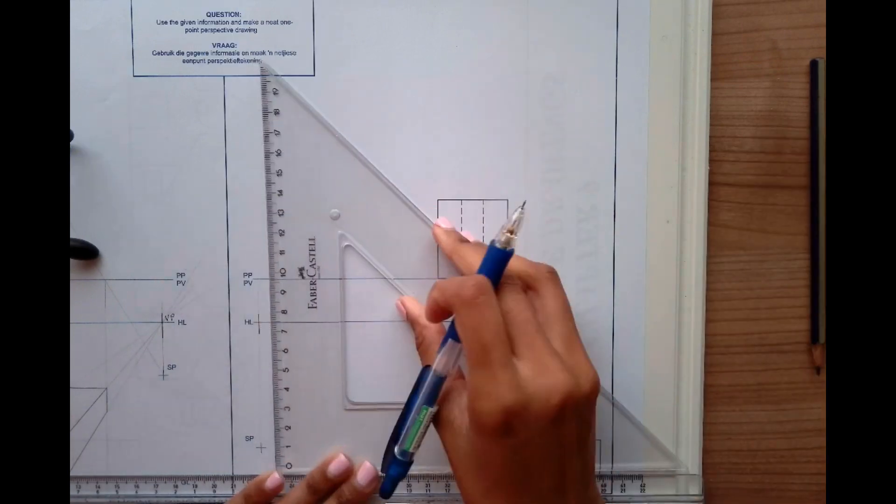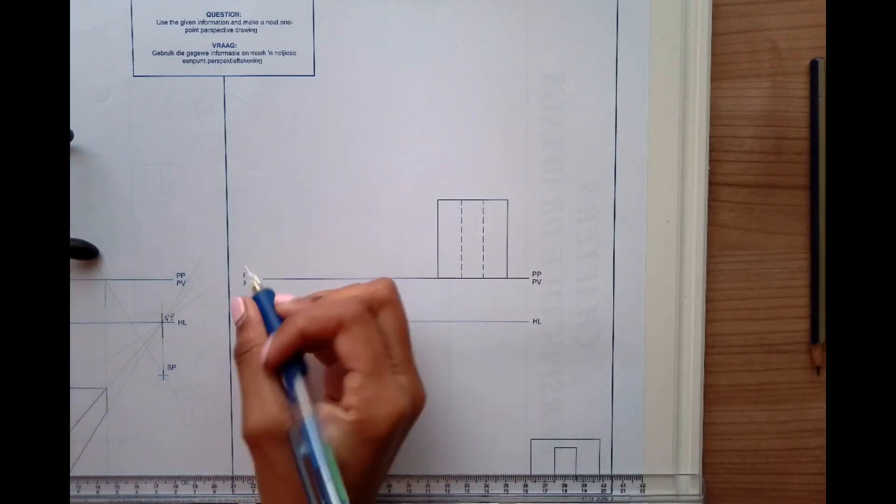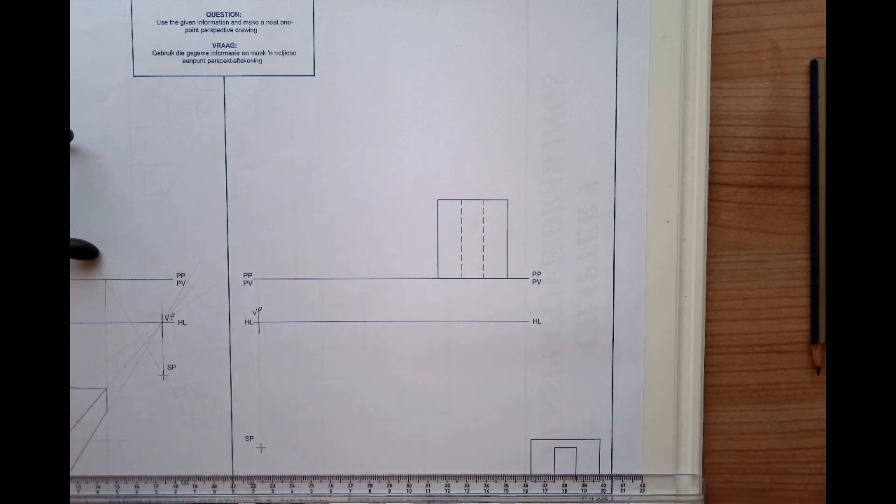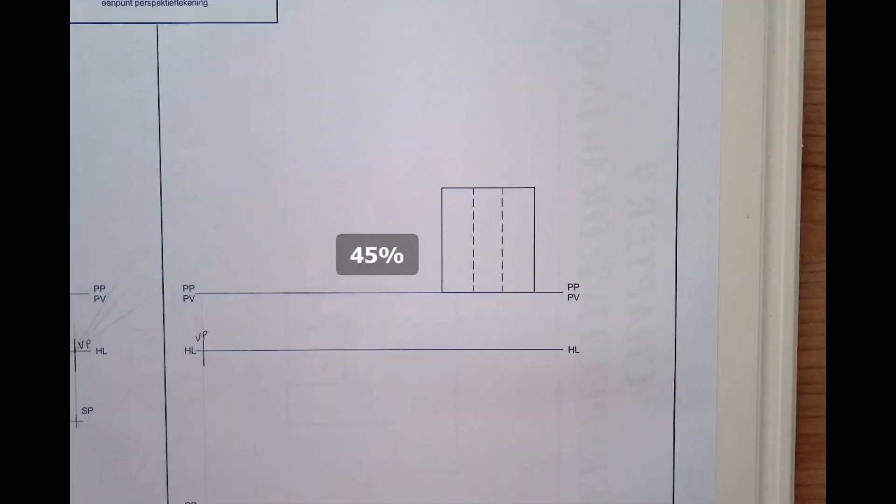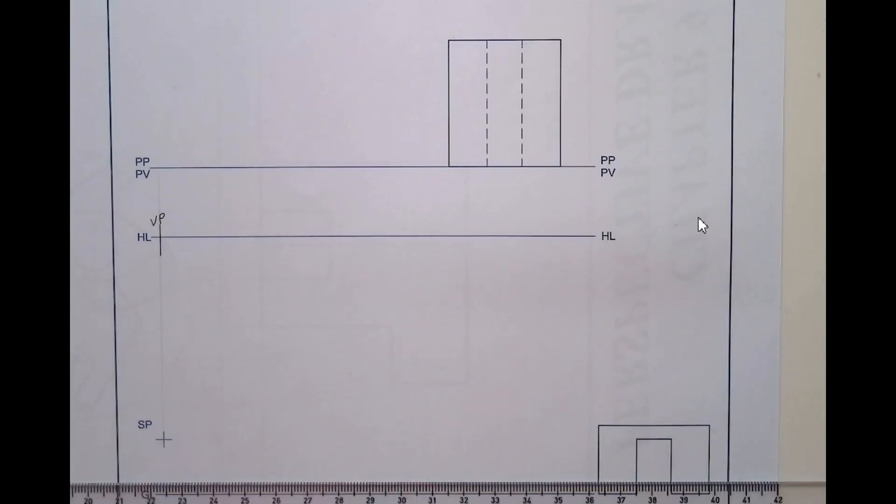Which is the HL, that is where you will get your point which you will then label the vanishing point. It is extremely important to label the vanishing point because you will get a mark for that.